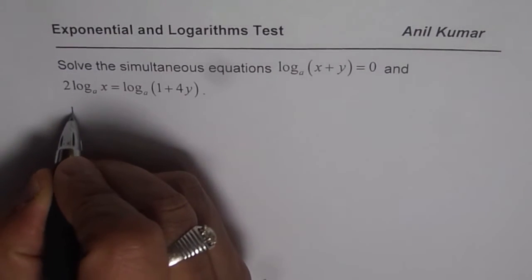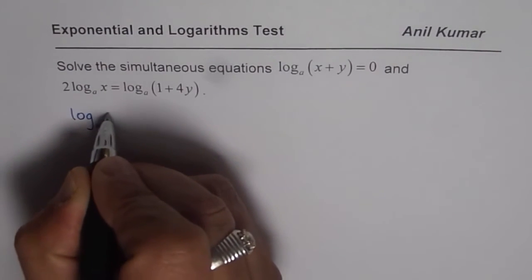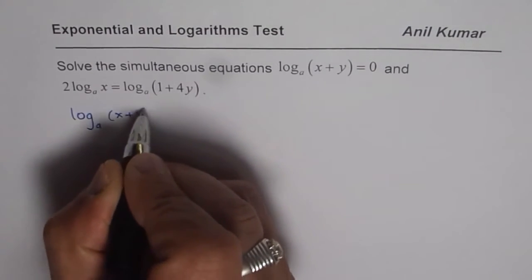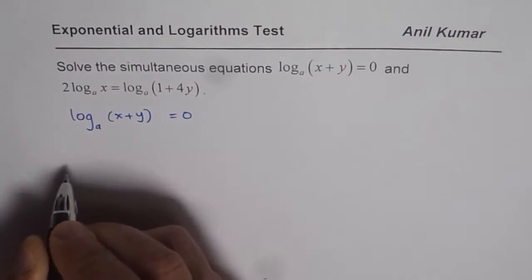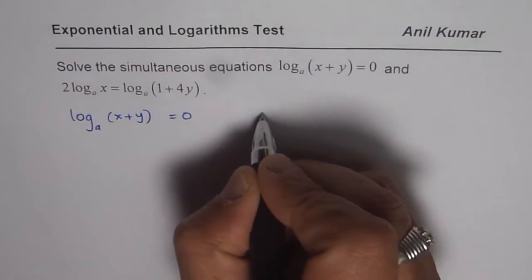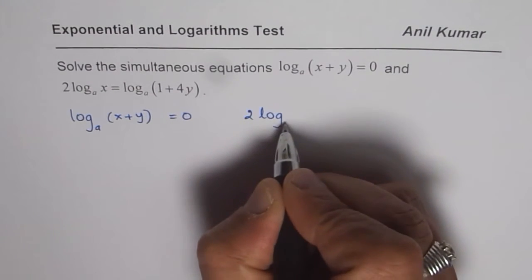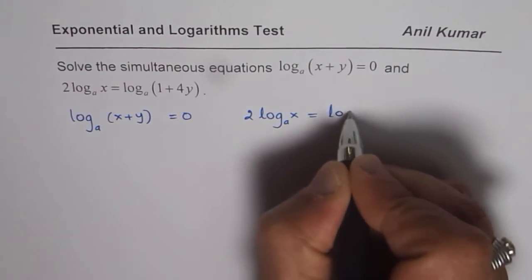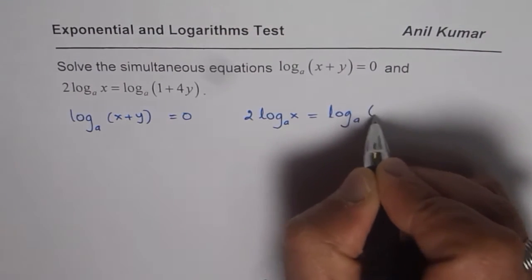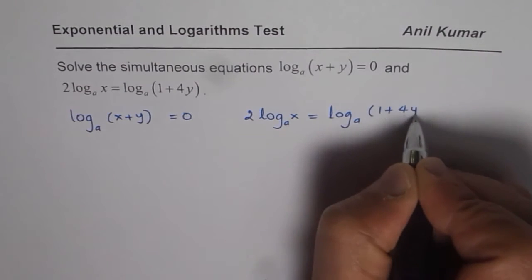So let us begin by writing these equations. These are log to the base A of (x + y) equals 0, and we have 2 times log to the base A of x equals log to the base A of (1 + 4y).